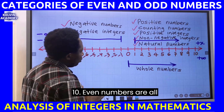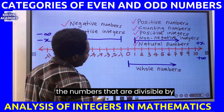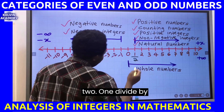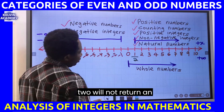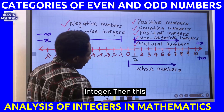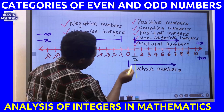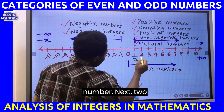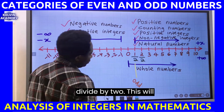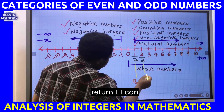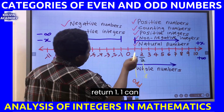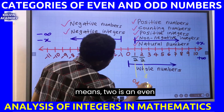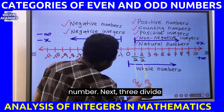Even numbers are all numbers that are divisible by two. One divided by two will not return an integer, so this becomes an odd number. Next, two divided by two will return one. One can be found on the number line, which means two is an even number.